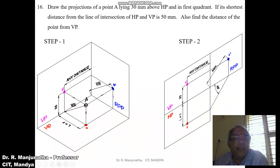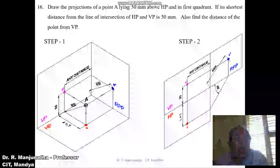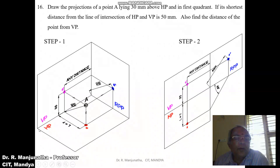This will be the distance above HP. When you look from the left side view, we can see the distance above HP, so that distance can be seen here. When you look from the left side view, this is the shortest distance, and that distance can be seen here. When you look from the front view, we can see the distance above HP, so that distance is seen in the vertical plane.